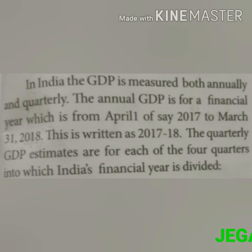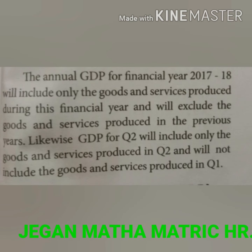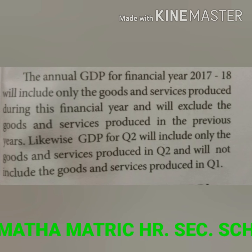The quarterly GDP estimates are for each of the four quarters into which India's financial year is divided. The 1st quarter covers April, May, and June. The 2nd quarter covers July, August, and September. The 3rd quarter covers October, November, and December. The 4th quarter covers January, February, and March. The annual GDP for financial year 2017-18 will include only the goods and services produced during that financial year and will exclude goods and services produced in previous years.